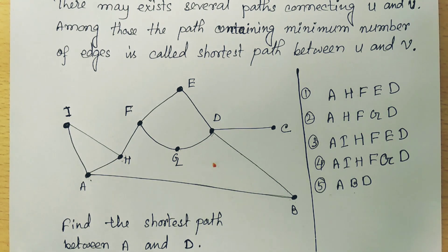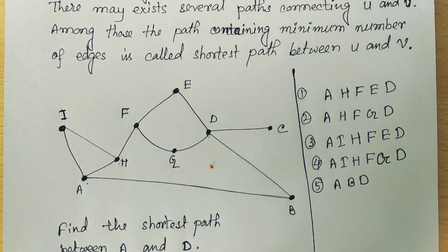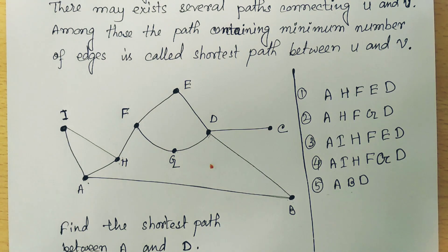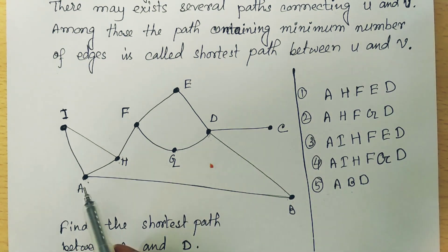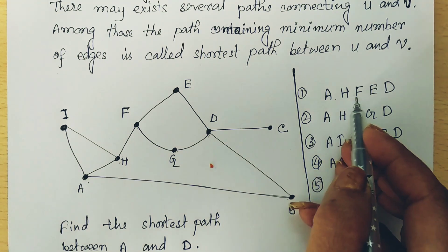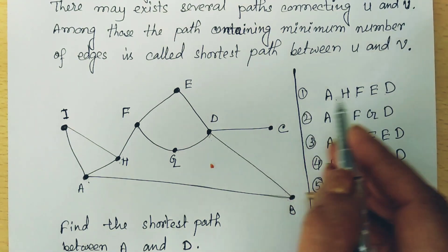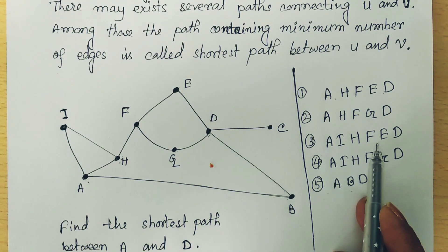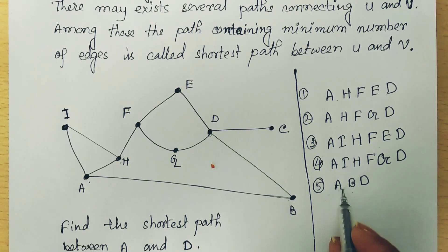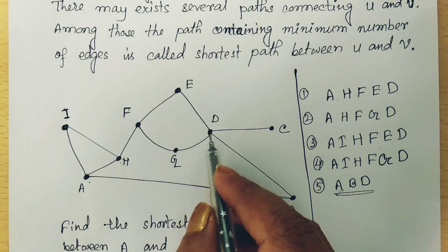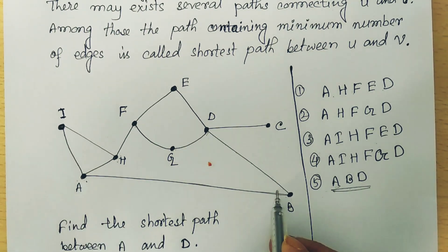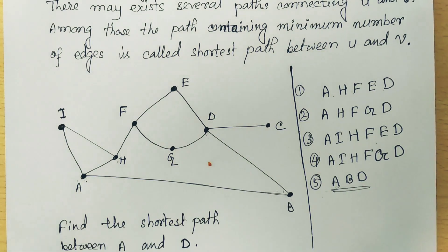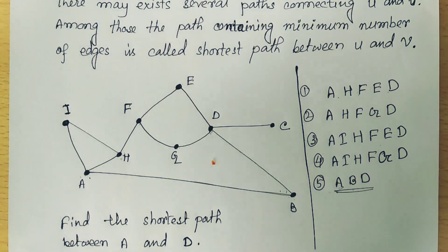To find the shortest path, we count the number of edges in each path. The first path has 4 edges, so its length is 4. The second path also has length 4. The third path has length 5, another has length 5, and one has length 2. So the shortest path from A to D is A to B, B to D.